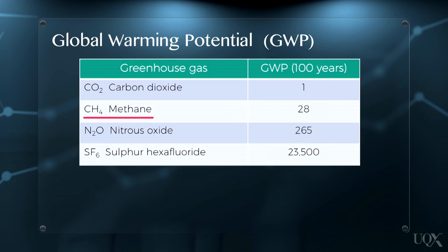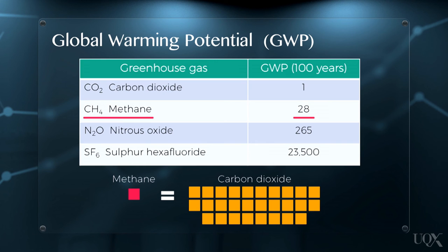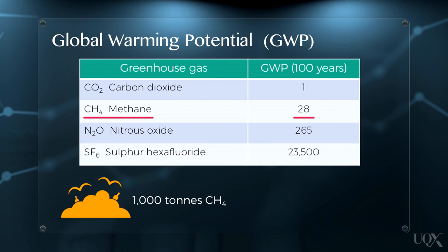Methane, for example, has a global warming potential of 28. That means 1 tonne of methane is equivalent to 28 tonnes of carbon dioxide. So, if 1000 tonnes of methane are generated annually at a landfill site, this is equal to 28,000 tonnes of carbon dioxide equivalent, or CO2e.